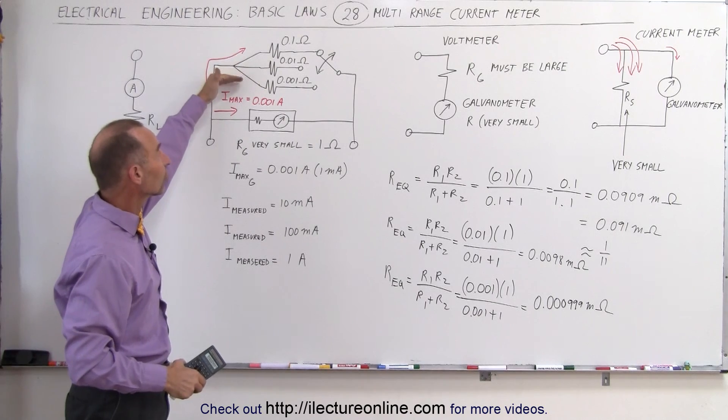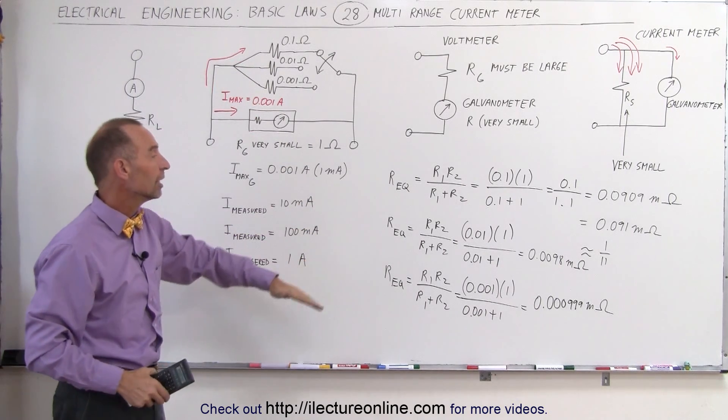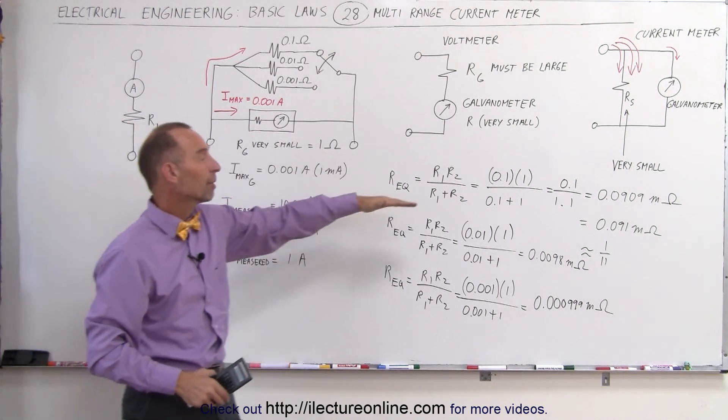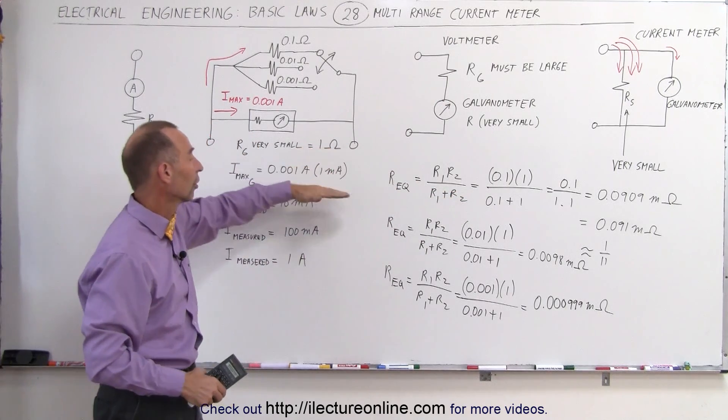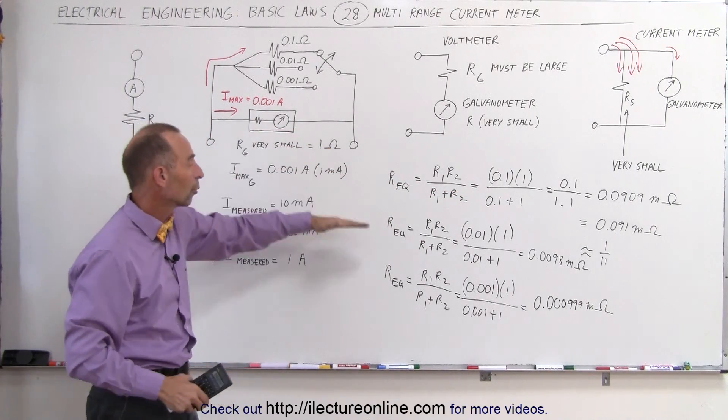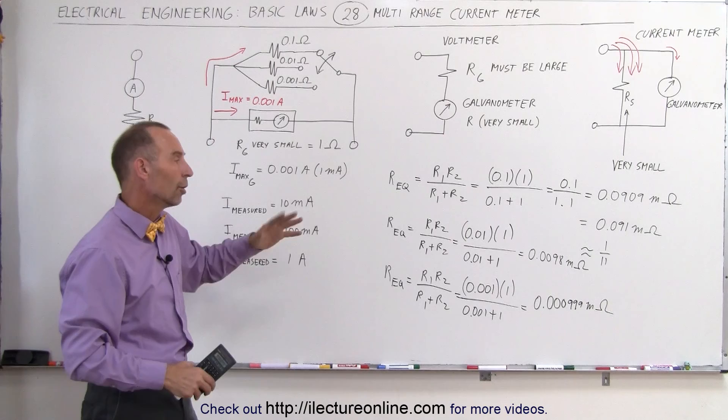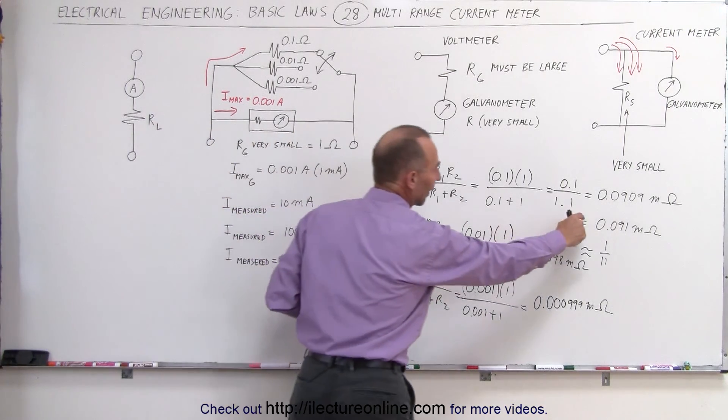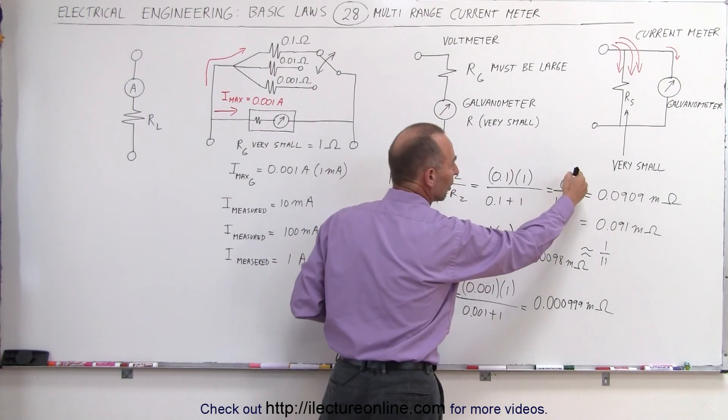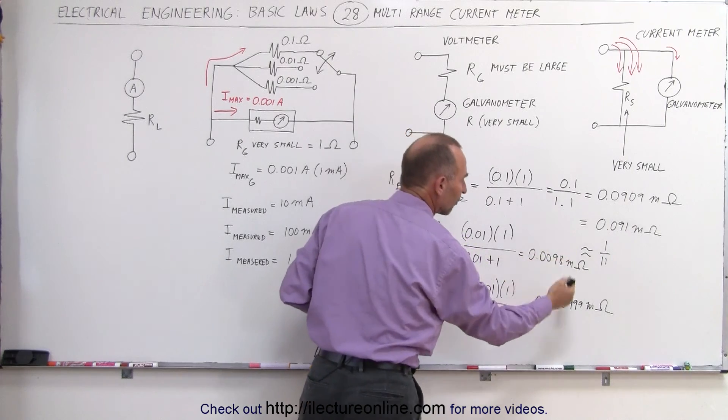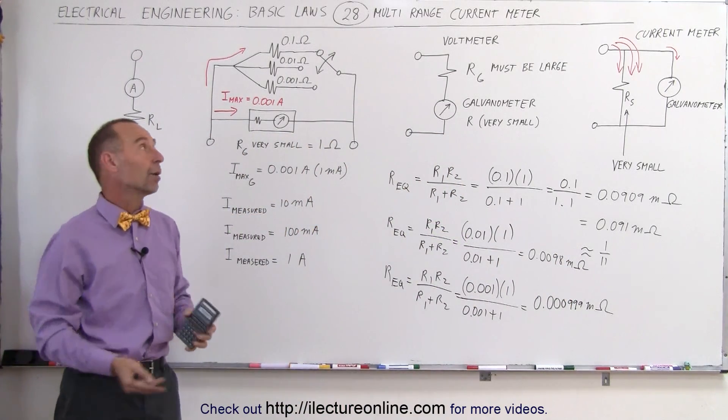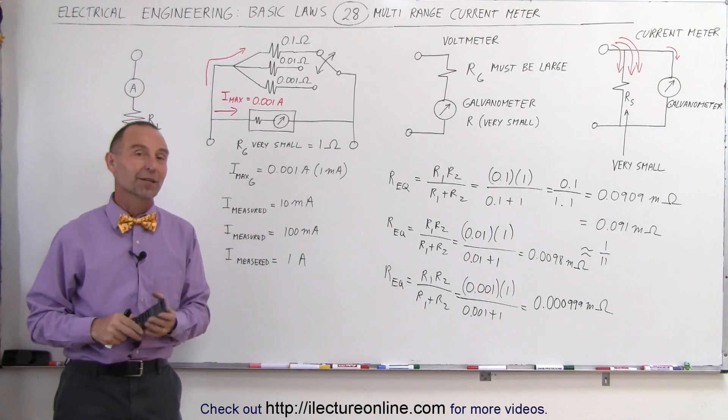So simply by changing the shunt resistor to various values, you can either dial in a setting where you can measure 10 times the galvanometer current, 100 times the galvanometer current, or 1,000 times the galvanometer current, with a slight difference, the fact that you don't exactly have 1 tenth the value, 1 hundredth the value, or 1 thousandth the value. And that's how we make multi-range current meters.